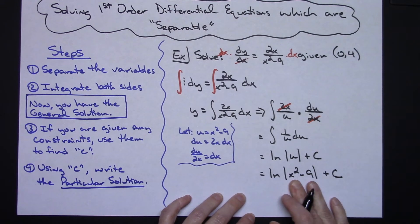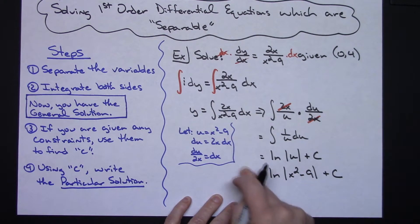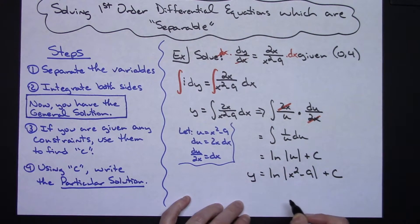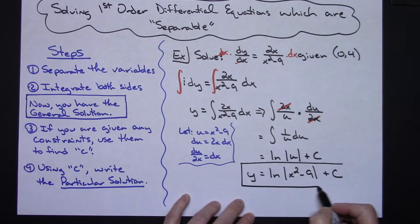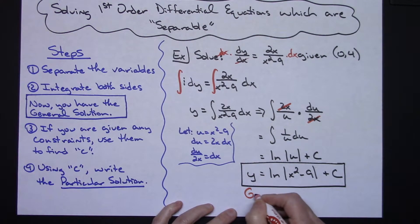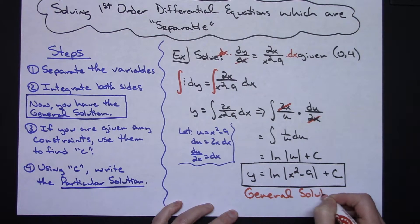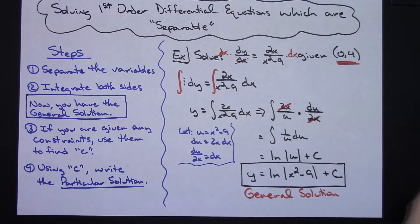The integration is done, and the y belongs on the left-hand side. So the general solution is y = ln|x² − 9| + c. If no constraints had been given, we would be done right there with just the general solution.